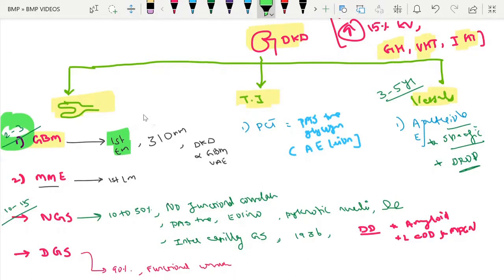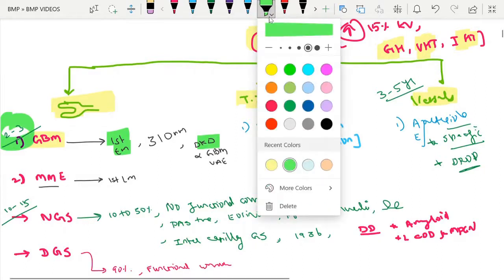The normal glomerular basement membrane thickness is 310 nanometers, with a range of 270 to 350 nm. In diabetic kidney disease, more than three times GBM thickening is common. Importantly, GBM thickening correlates with DKD progression and the urine albumin-creatinine ratio.